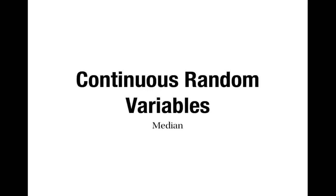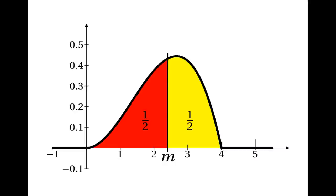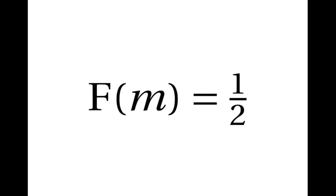This is a video about finding the median of a continuously distributed random variable. Suppose we're looking at the graph of a probability density function. The median is the place where the probability of getting less than the median is a half, and the probability of getting more than the median is a half. In other words, it's where the cumulative probability is a half, so the output from the cumulative distribution function is a half. This is the key formula: the median is the solution of F(m) equals a half.